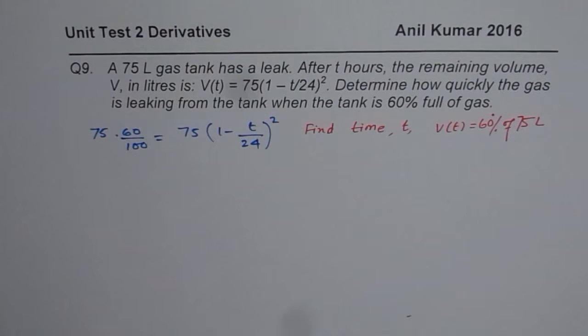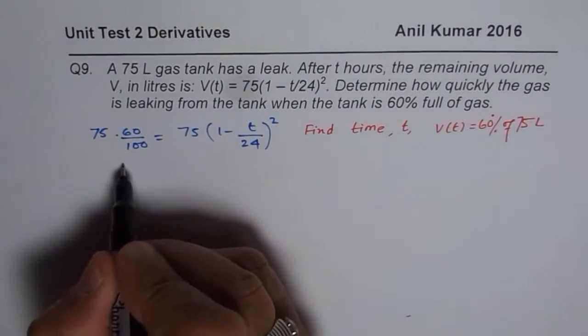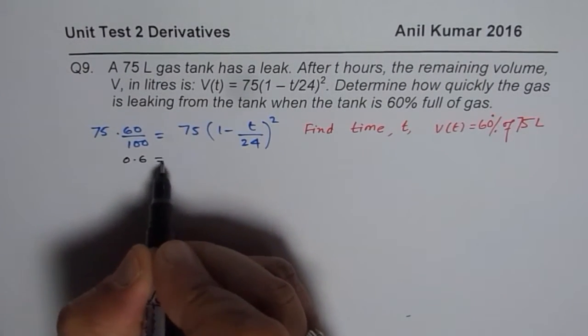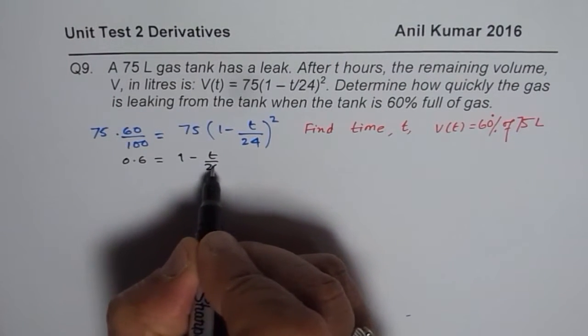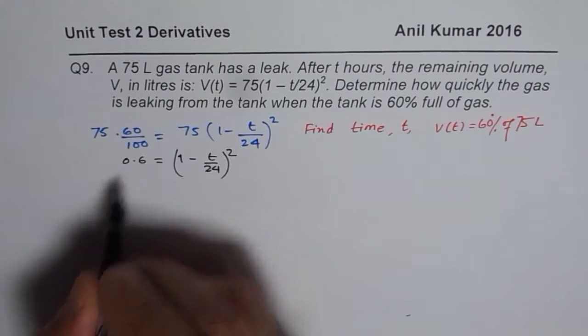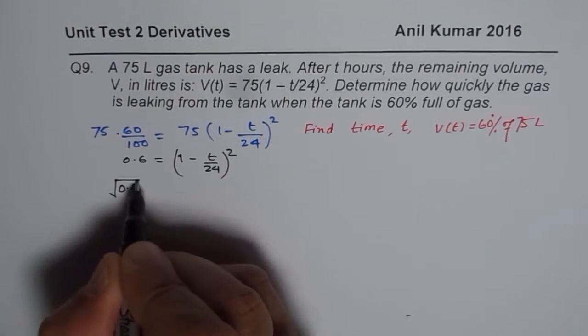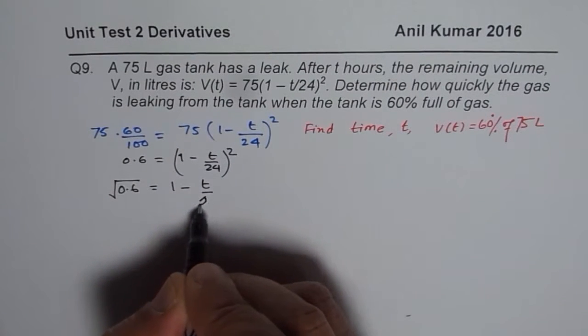So that is the first thing you need to find. So we can cancel 75, 75. 60 over 100 is 0.6 is equal to 1 minus T over 24 whole square. So now we'll square root.